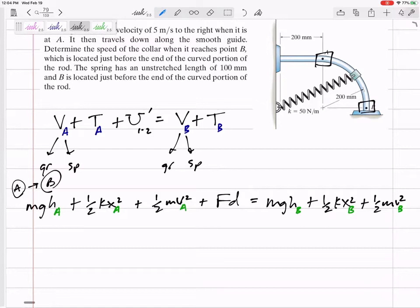So MGH. You have to choose up to be positive, but you can set your ground to be wherever you want it to be. I'm going to set that as my ground, which would make that height zero, and it would make this height when it's at A. See if that has a radius of 200, it would be 200 right there. Should we put 200?